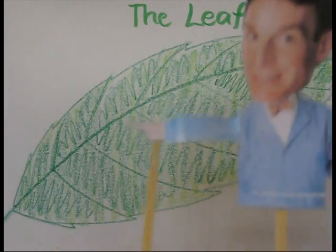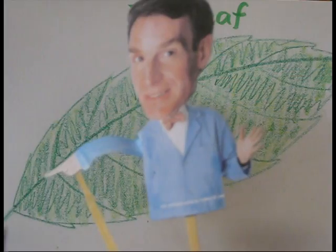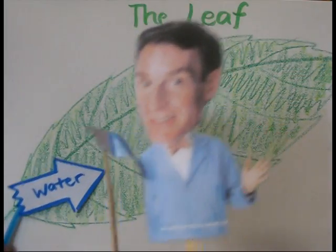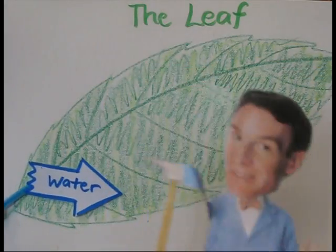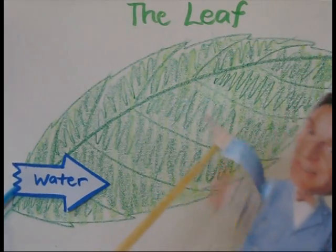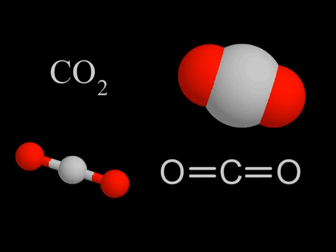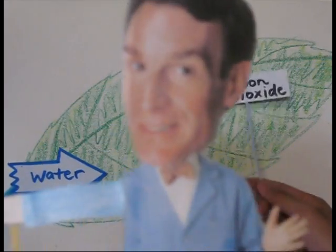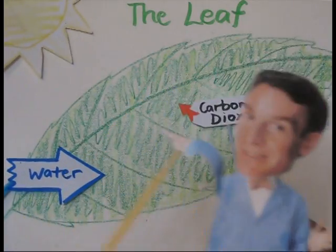Photosynthesis is how plants make their food. First, water is absorbed through the roots. Then, carbon dioxide is absorbed through the leaves. Then lastly, it's the sun, where sunlight is shining up on the leaf.